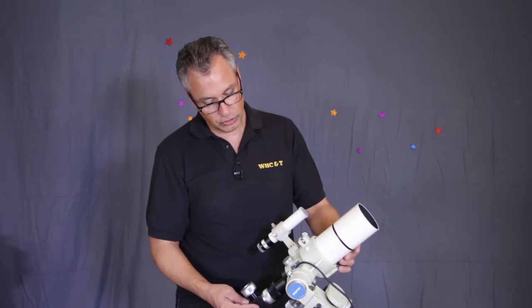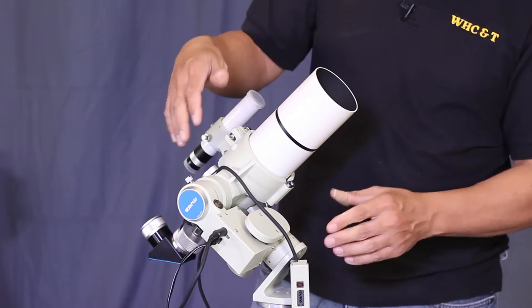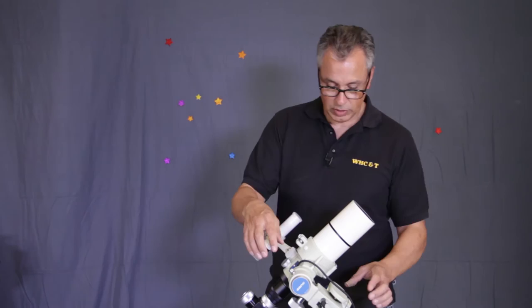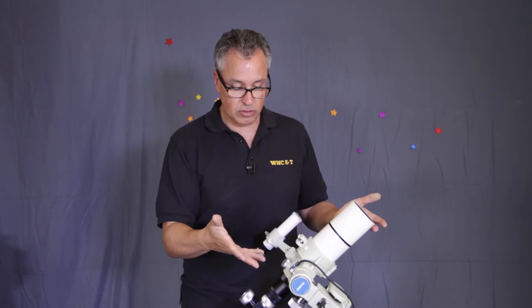Then what's happening is that once you tighten these clutches, the motor's engaged and it'll simply start tracking. As long as I have the access here, the equatorial access, pointed towards the North Pole, the telescope will track at any object that I point at.